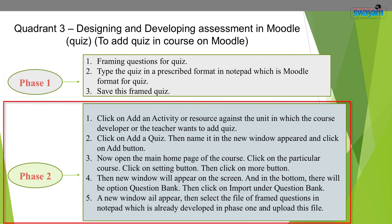Second phase: click on 'Add an activity or resource' against the unit in which you want to add a quiz. Open your Moodle site and Moodle course, then click on 'Add a quiz' and name the quiz. Then open the main homepage of the course, click on the particular course, click on the settings button, then click on the More button. A new window will appear with the option 'Question bank.' Click on Import under the question bank. After clicking on Import, a new window will appear. Select the file of framed questions from Notepad — already developed in Phase 1 — and upload this file.